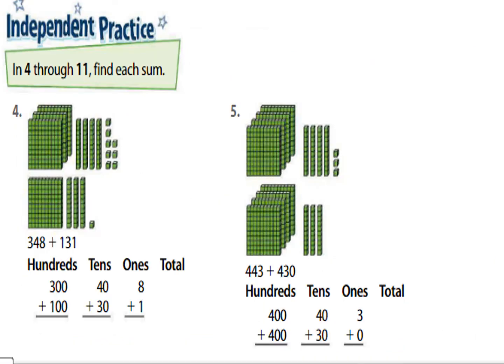Now look at question number 4: find each sum. 348 plus 131. You can use the place value blocks and count on the hundreds, tens, and ones. Look at the hundreds: 300 plus 100 equals 400. Then the tens: 40 plus 30 equals 70. Then the ones: 8 plus 1 equals 9. Now find the total: 400 plus 70 plus 9 equals 479.